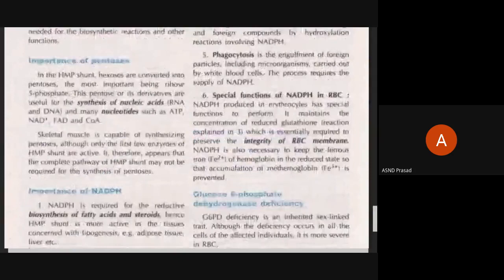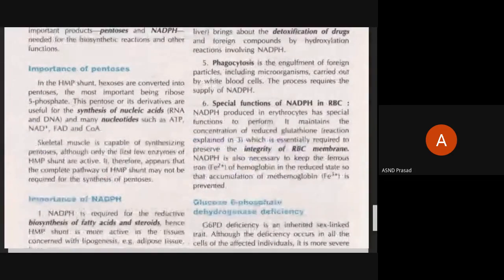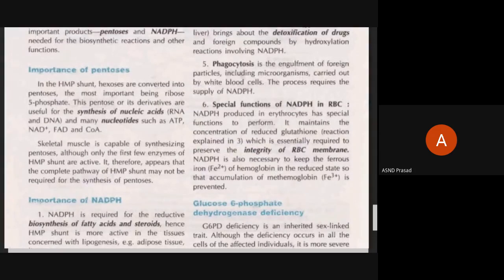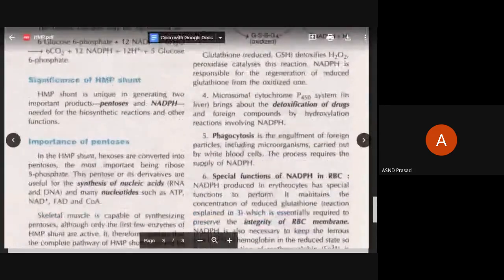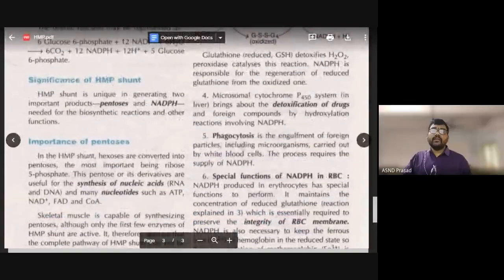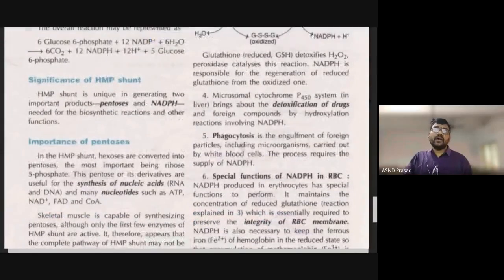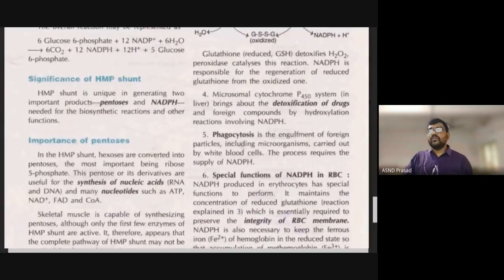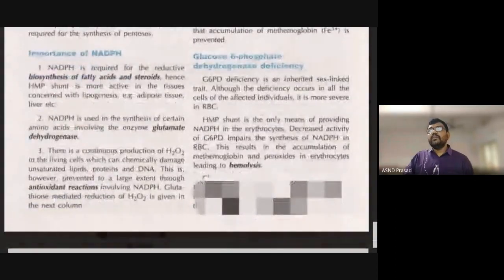The second important product is ribose-5-phosphate. Ribose-5-phosphate is essential for the biosynthesis of DNA and RNA, as it forms the sugar backbone of nucleotides.